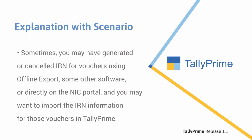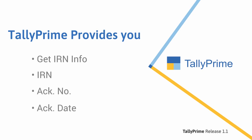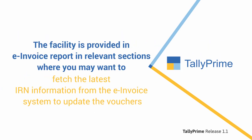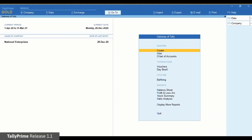Sometimes you may have generated or cancelled IRN for vouchers using offline export, some other software, or directly on the NIC portal, and you may want to import the IRN information for those vouchers in TallyPrime. TallyPrime provides a facility called GetIRNInfo, using which you can import the latest IRN, ACC number and ACC date along with the QR code from the e-invoice system to the vouchers. This facility is provided in the e-invoice report in relevant sections. Let us see how to use the facility in different scenarios.